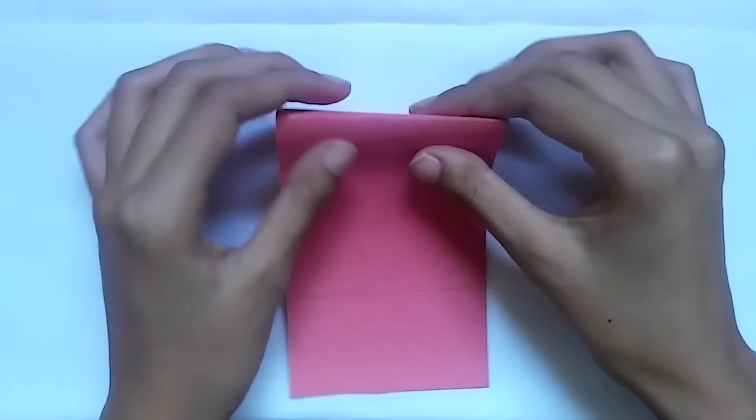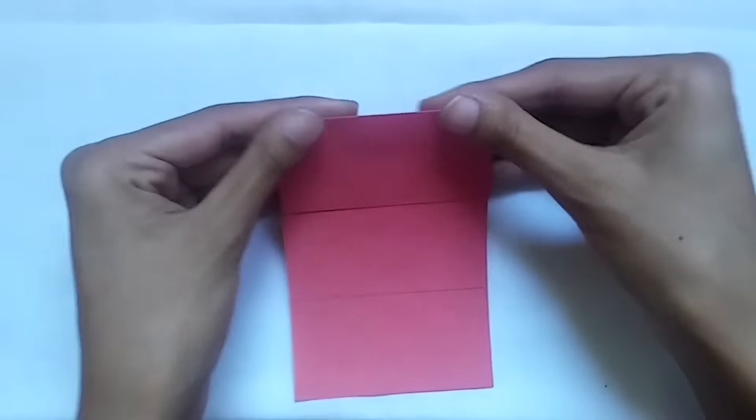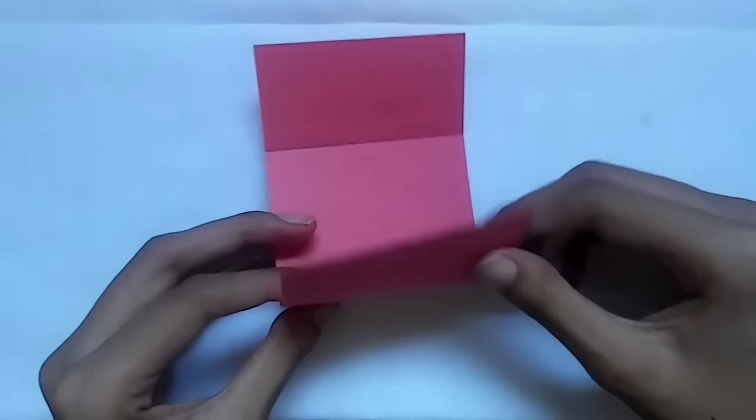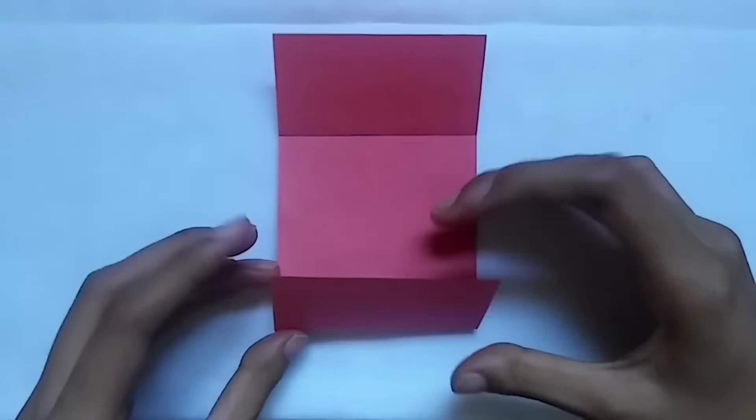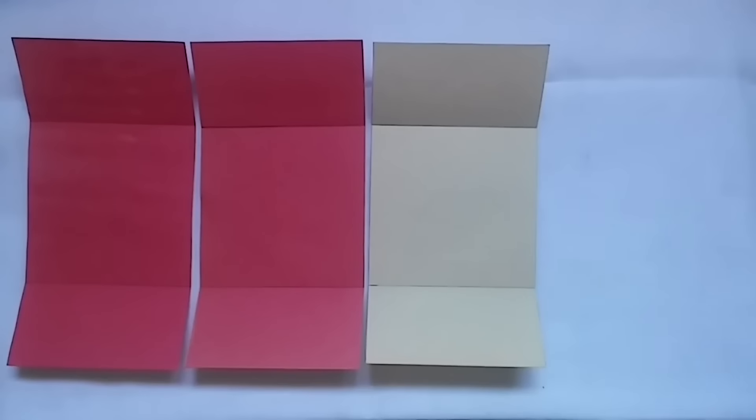Then fold and crease both of these lines. It's best if you crease them forward and backward. It should look something like this. Repeat to the other three rectangles.